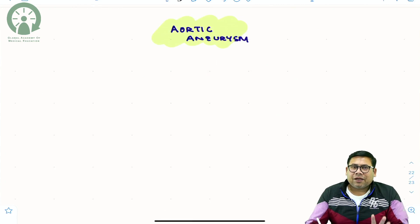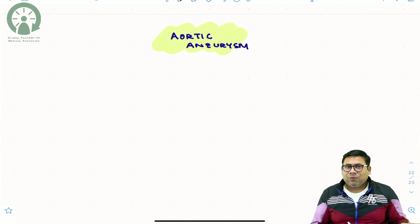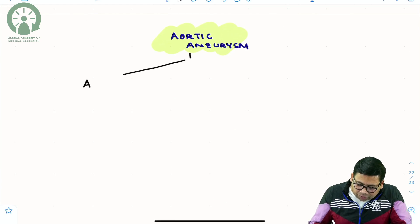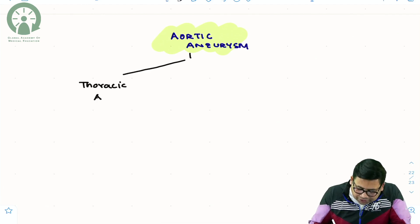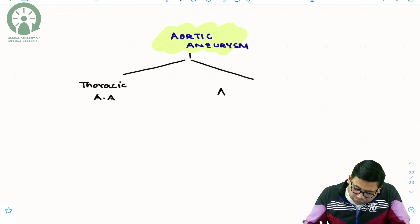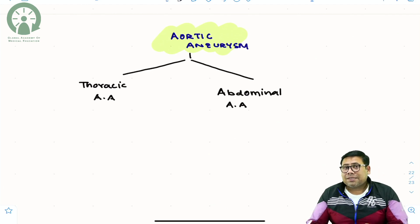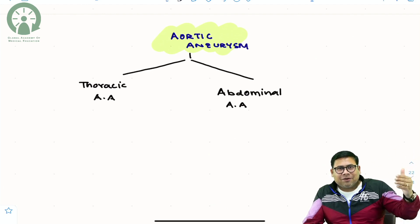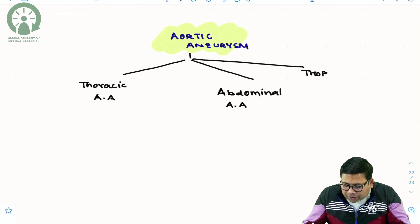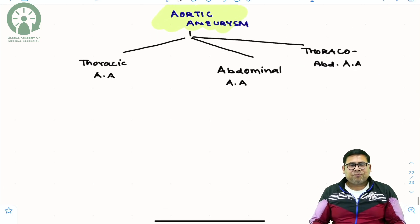Aortic Aneurysm is of three basic types. One is involving the thoracic part of the Aorta — thoracic Aortic Aneurysm (TAA). Then we have abdominal Aortic Aneurysm. And there is a category which starts at the level of thoracic Aorta and goes up to the abdominal Aorta — that is the thoraco-abdominal Aneurysm. Overall, the most common Aortic Aneurysm is the abdominal Aortic Aneurysm.